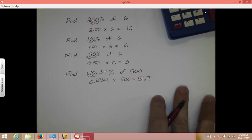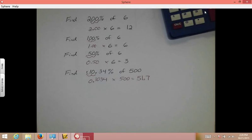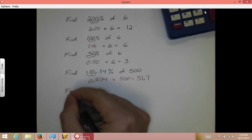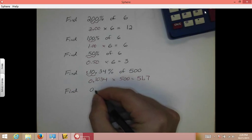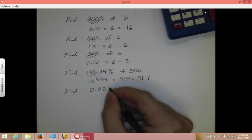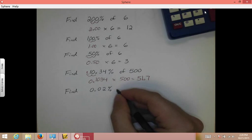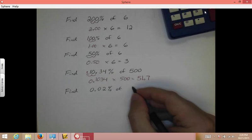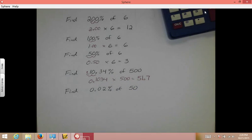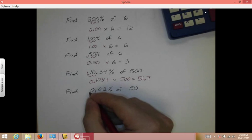Now, even if the decimal is very small to begin with, you still do it the same way. For example, find 0.02% of 50. To the left, to the left.